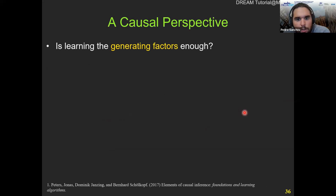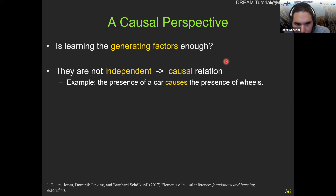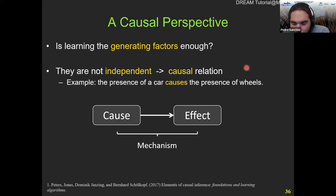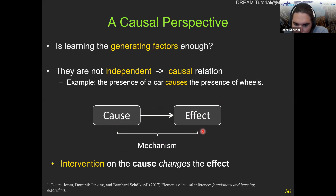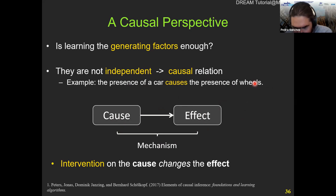Now looking from a causal perspective — we just saw that learning the generating factors is not enough. If the factors are correlated, if there is bias in your data, it's because there is a stronger type of relation between them — a causal relation. For example, the presence of a car causes the presence of wheels. When you have two variables that are correlated, one is the cause and the other is the effect, or there is a confounder causing both. These relations are directional — if you make an intervention on the cause, it will change the effect, but not the other way around. This perspective is useful because you can create these relations about all the variables in your problem, allowing a much deeper understanding of your domain.